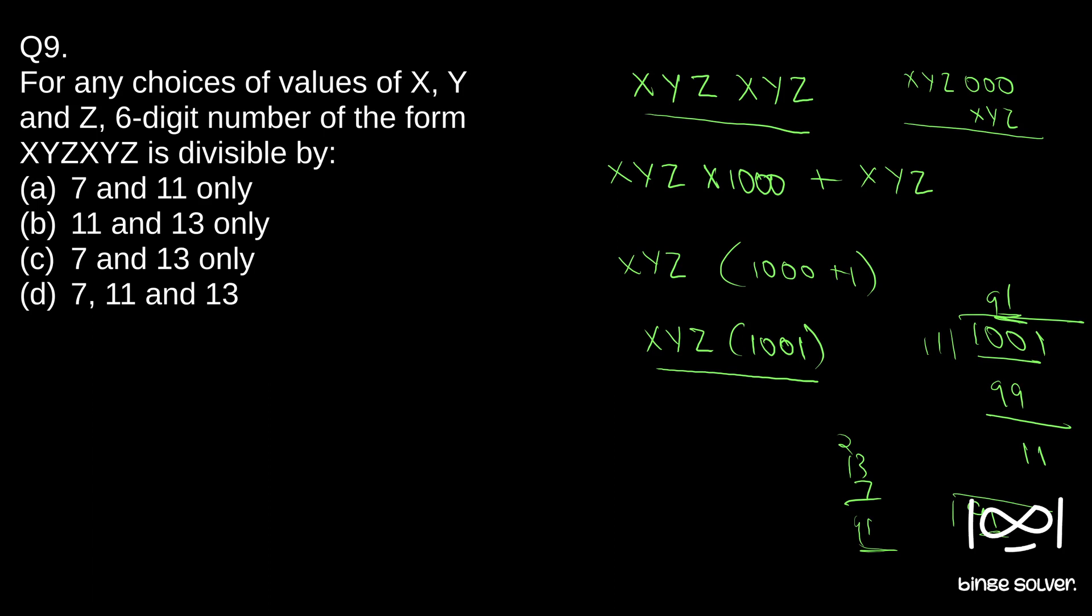So thousand one is, XYZ into thousand one can also be written as XYZ into eleven into thirteen into seven.